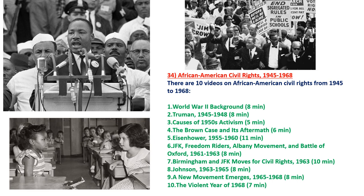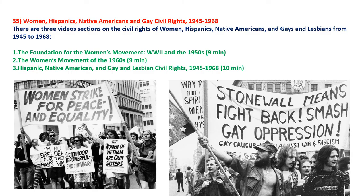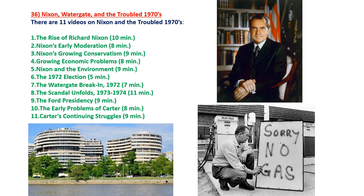The fourth topic focusing on 1945 to 1968 covers African American civil rights, going through those same presidencies and including things like Brown versus Board of Education, Martin Luther King, and all the voting legislation. The fifth and final topic for this period consists of three videos dealing with women, Hispanics, Native American, and gay and lesbian civil rights during the period.